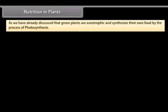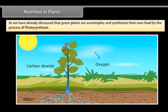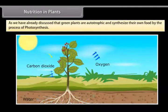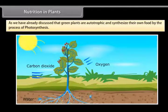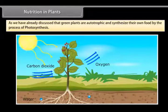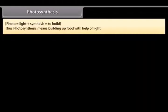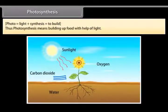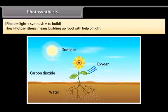As we have already discussed, green plants are autotrophic and synthesize their own food by the process of photosynthesis. Photosynthesis: photo means light and synthesis means to build. Thus, photosynthesis means building up food with help of light.